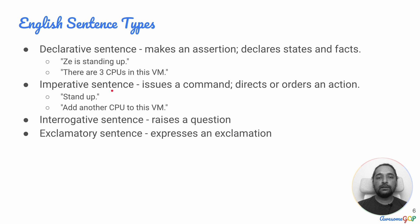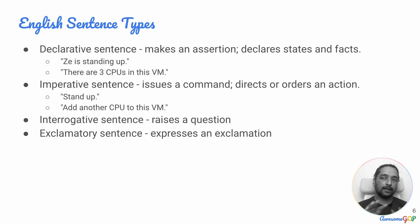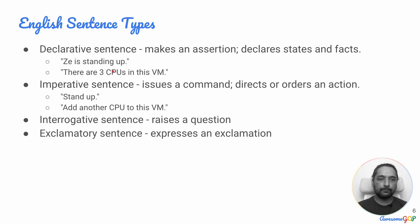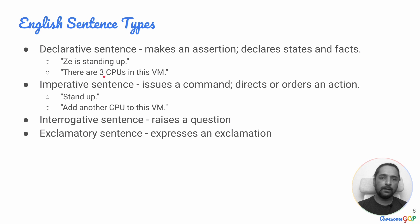An imperative sentence, on the other hand, issues a command — it is ordering or directing an action. So instead of the declarative 'he is standing up,' the imperative would be 'stand up.' If we wanted to add CPUs, we would say 'add another CPU to this VM.' It's a direct action, an order given for an action — it's not describing the current state.